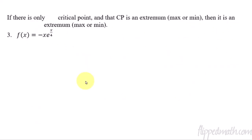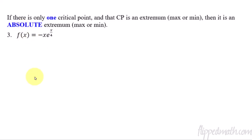For our last problem, I want to point out that sometimes you only have one critical point. When you have one critical point and that critical point is an extremum — a maximum — then it is an absolute extremum. If you have one critical point and we know it's an extremum, then it's absolute as opposed to just relative. In practice, it's nice to be able to say it's absolute if you only have one critical point.